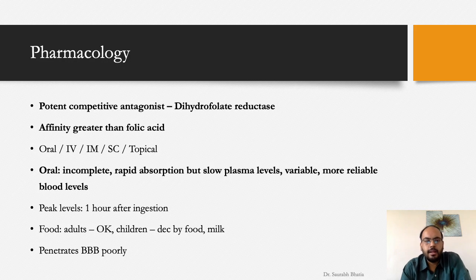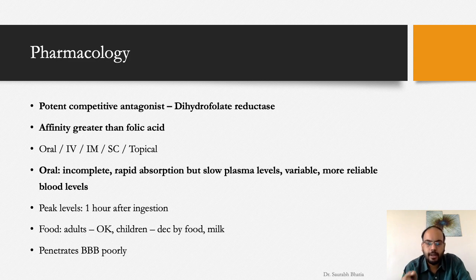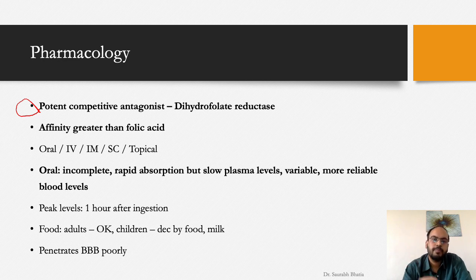Methotrexate is a potent competitive antagonist of dihydrofolate reductase. It competes with the regular substrate, folic acid, and attaches itself to DHFR so the enzyme cannot work. Its affinity for the enzyme is greater than that of folic acid, which explains its potency. Potent means high affinity for the enzyme; competitive means it competes with folic acid.